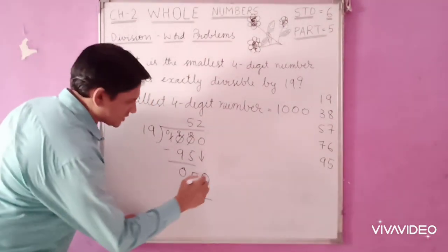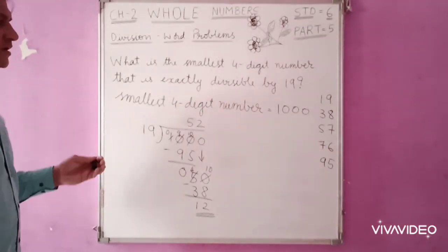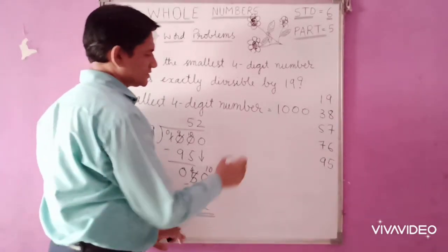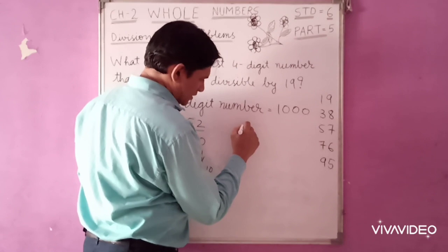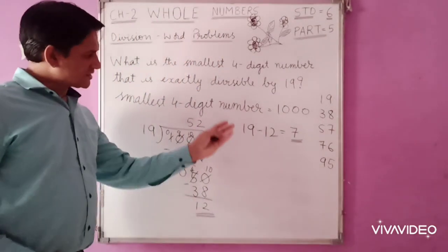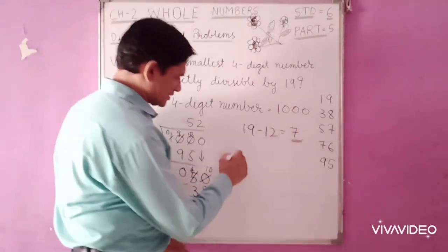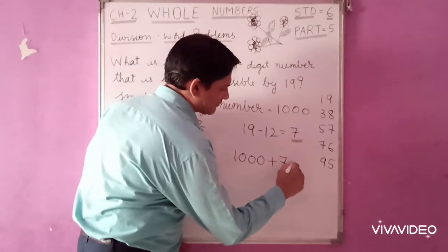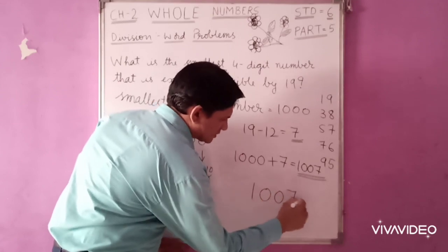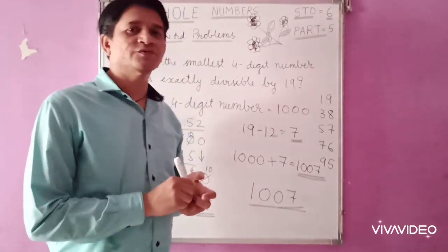So the remainder is 12. Here, we are not directly subtracting 1000 minus 12. So what we do is: 19 minus 12. What we get? 7. When we subtract 19 minus 12, we get 7. We add this to 1000: 1000 plus 7 is equal to 1007. So 1007 is the number exactly divisible by 19, leaves no remainder.